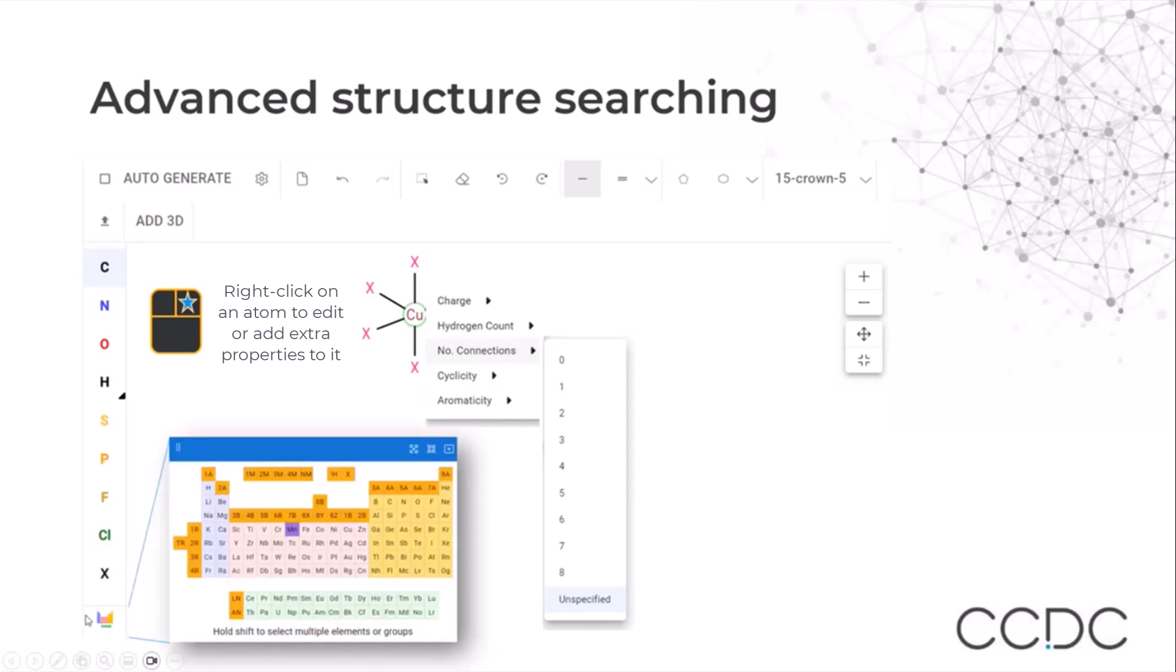If we look at the periodic table, we can not only select other elements which are not in the quick view, but we can also select multiple elements or entire groups.